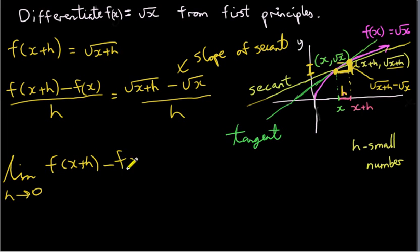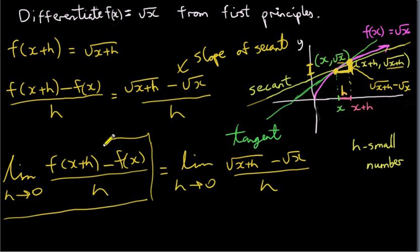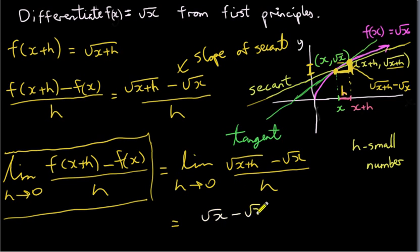So I'll write out our general formula — this is the general formula for any function. We want to take the limit as h goes to zero of, for this particular function which is root x: root x plus h minus root x, all divided by h. Now, if we try to take our limit here, we're going to run into difficulties as it stands, because if we let h go to zero, we're going to get root x minus root x on top and zero underneath.